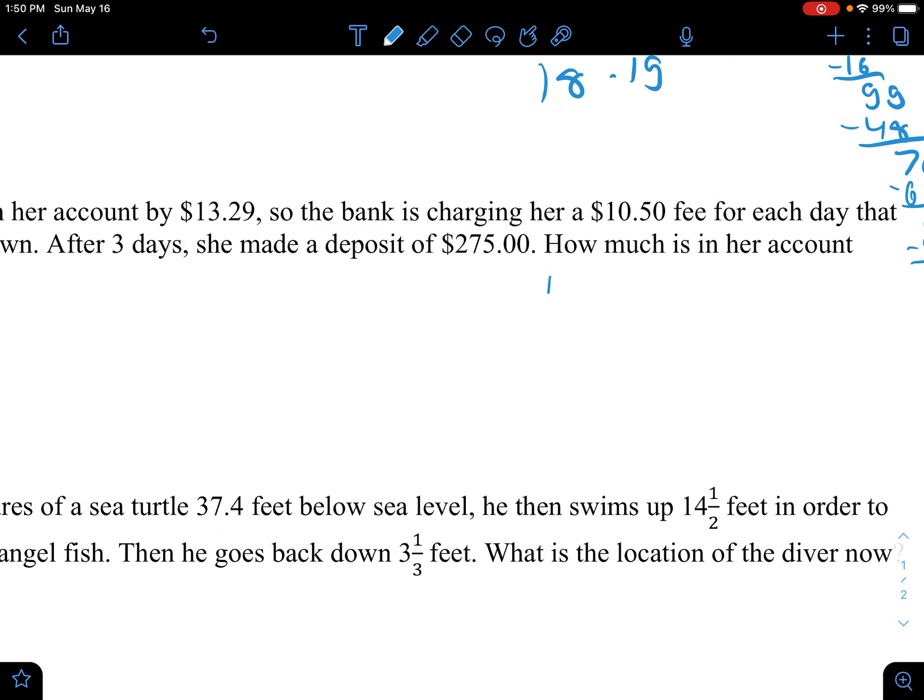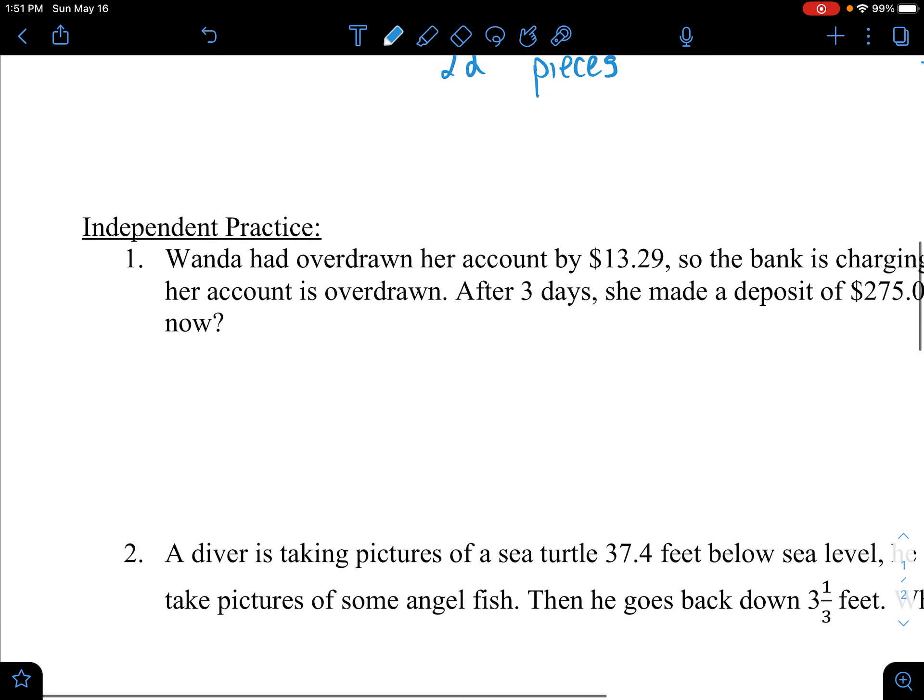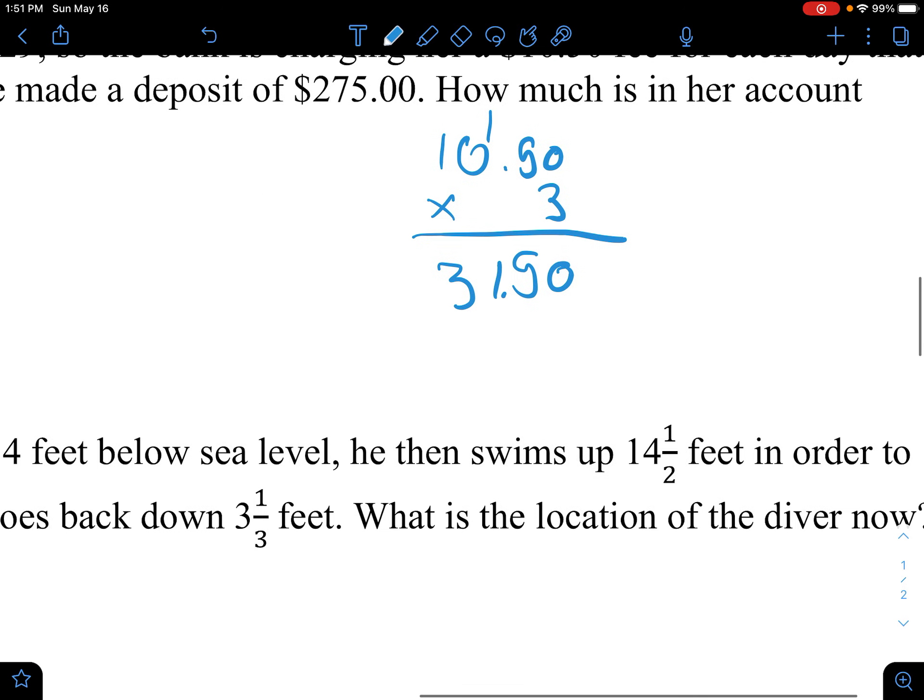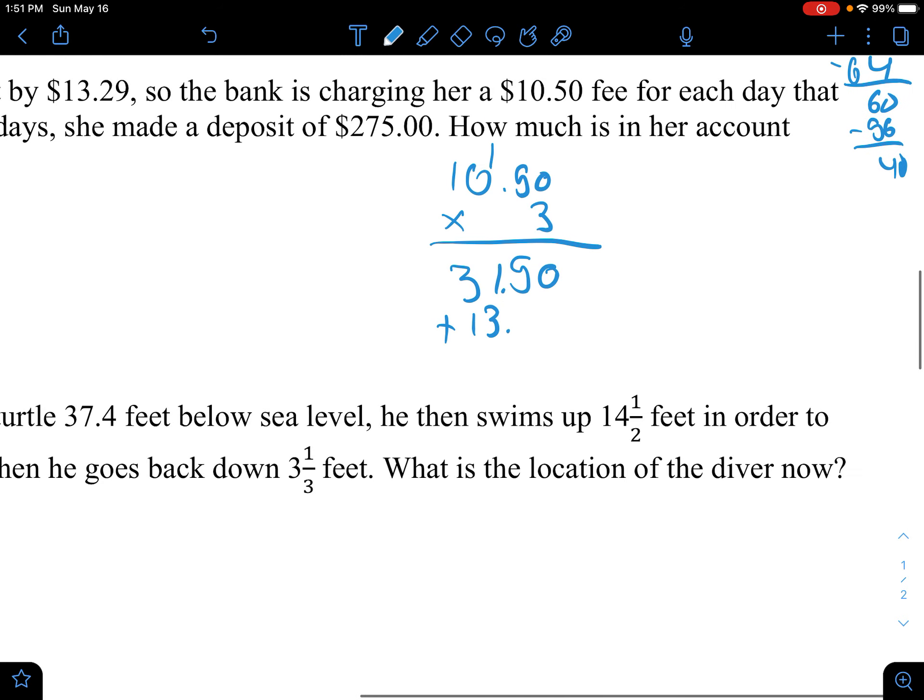So, we know that she gave money after three days. So, we have to multiply $10.50 with three. So, that will give us $31.50. And we also have to add that with $13.29 because that's how much money she has overdrawn.